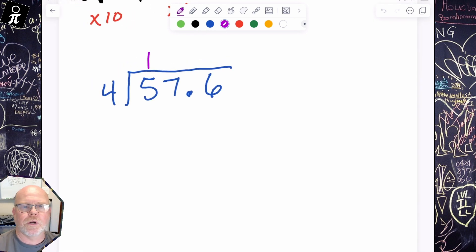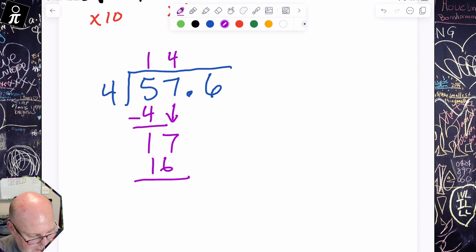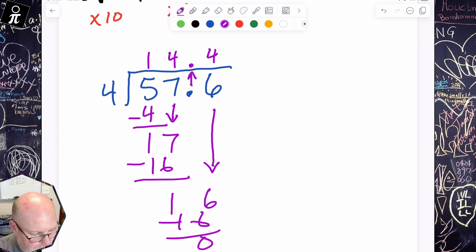And so, 4 goes into 5 one time. That's 4, and that gives me 1 left over. I'm going to drop the 7. That's 17. So, 4 goes into 17 four times, that's a total of 16. I subtract, I get 1 left over. I drop that 6. I've got 16. So, 4 goes into 16 four times, and that's 16 with nothing left over. And so, that decimal goes straight up. So, our answer is 14.4.